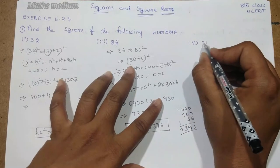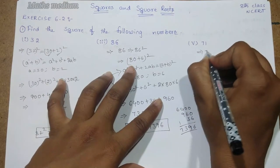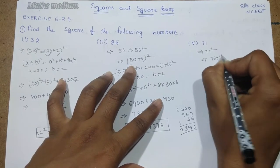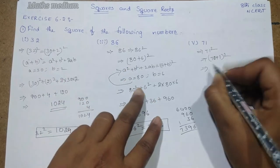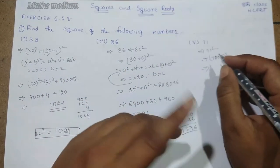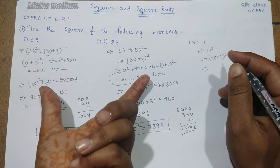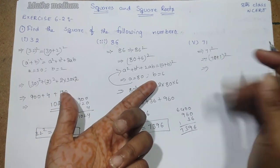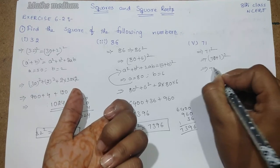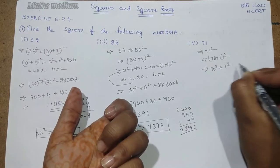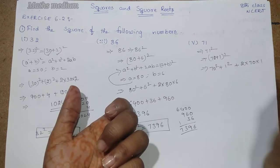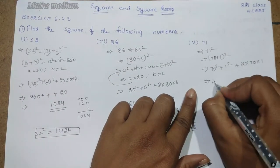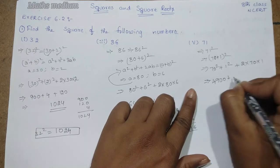Next, coming to 71. For 71 square, we write it as 70 plus 1 whole square. I won't state the formula again because we already know it and explained it in two problems. So directly: 70 square plus 1 square plus 2 into 70 into 1. 70 square is 4900 plus 1.